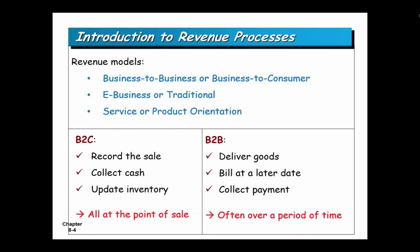There are two different general revenue models. The first is business-to-business, the second is business-to-consumer. They differ primarily on trust. Business-to-business is done with a trust relationship more often than not, where one business delivers goods to the other, they're billed at some time in the future, and then payment is collected after that billing date.